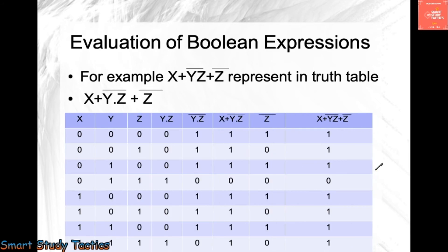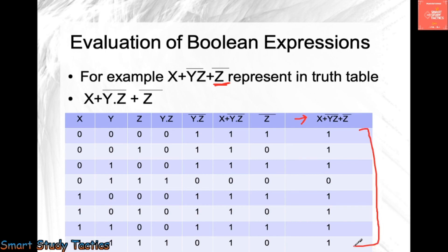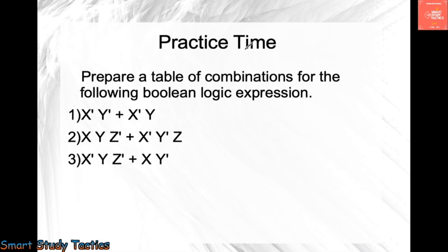Now we add the last value, which is z complement. We compute z complement from z, then add it to the previous result using OR. One plus one is one, one plus zero is one, and zero plus zero is zero. So the final resultant values come out as: 1, 1, 1, 0, 0, 0, 1, 1, and so on. This gives us the complete output column.